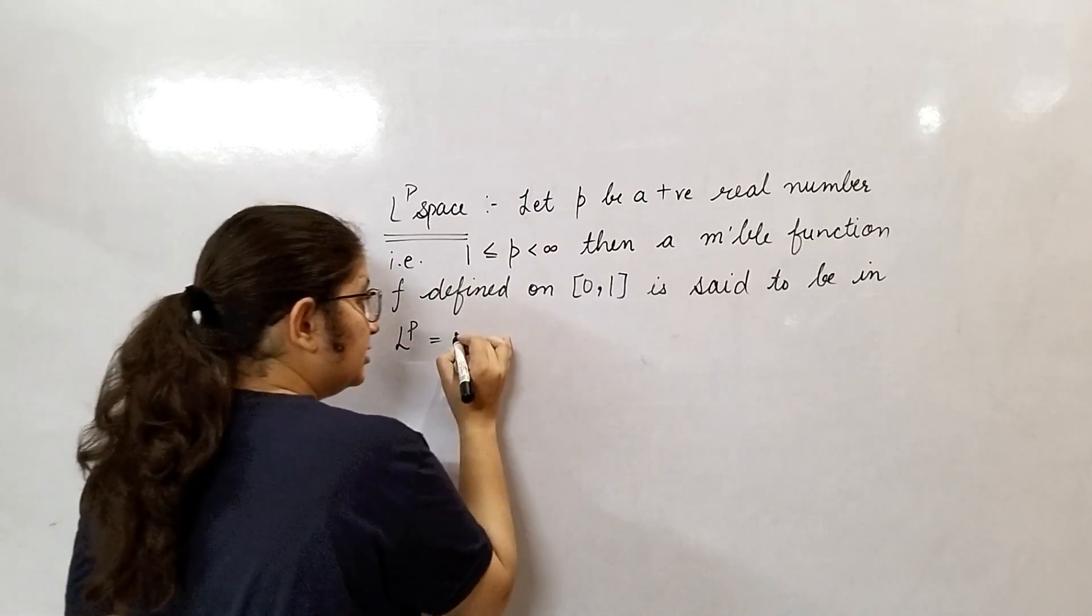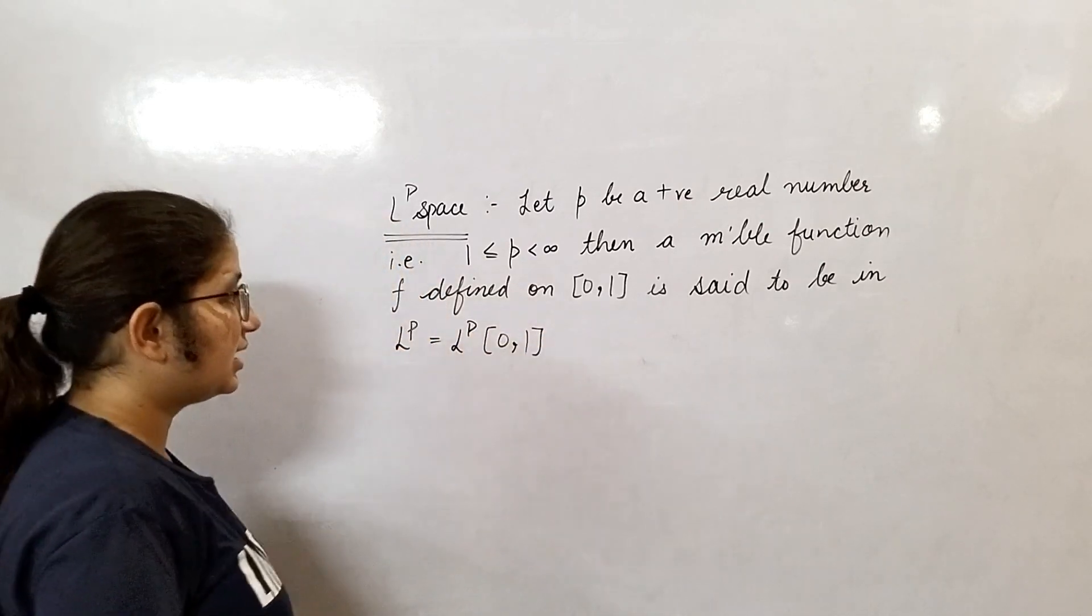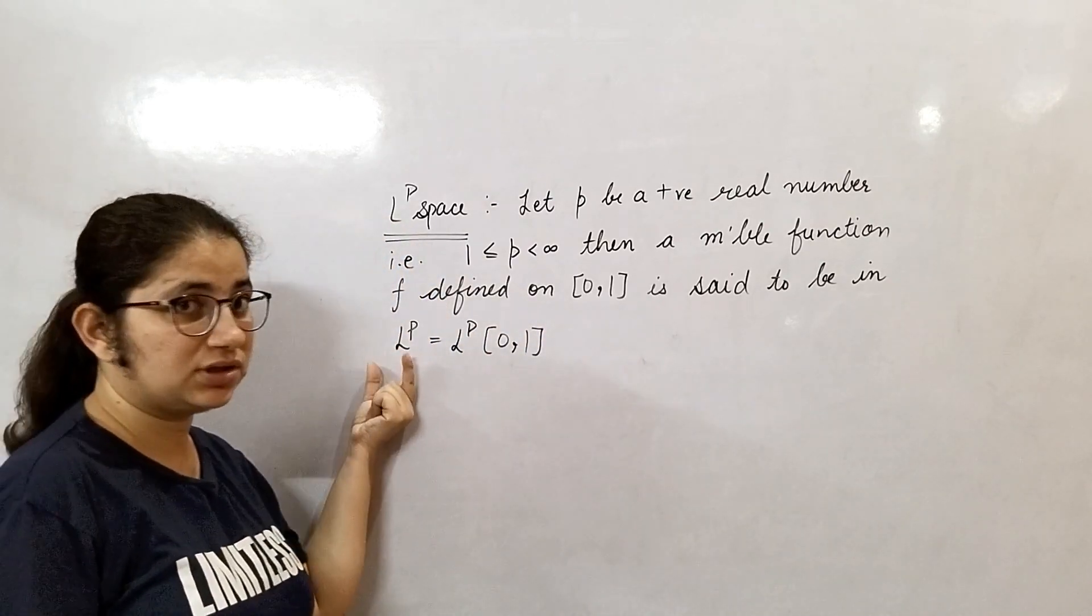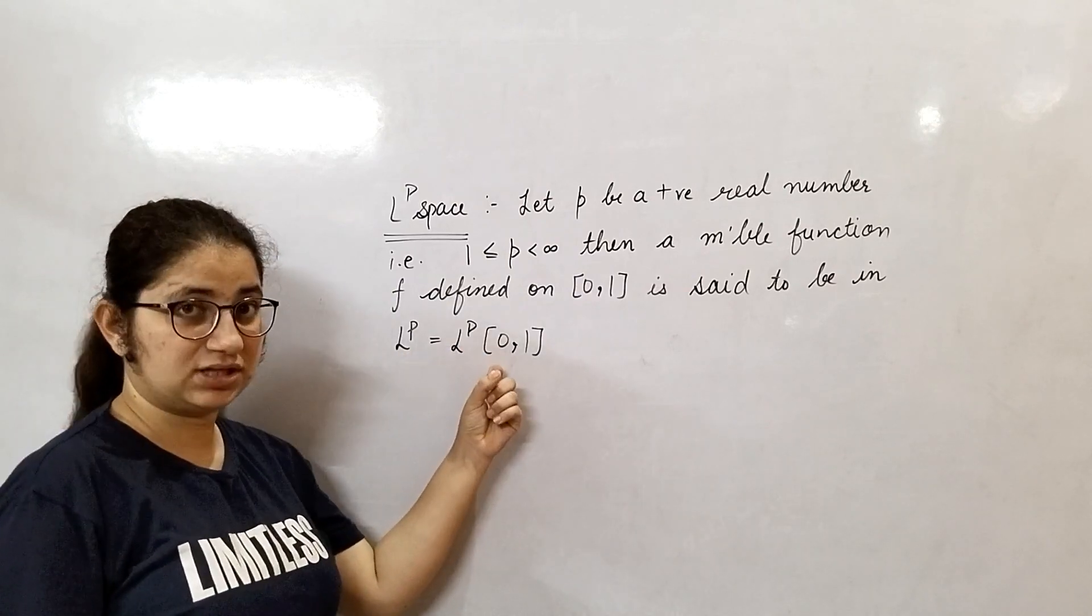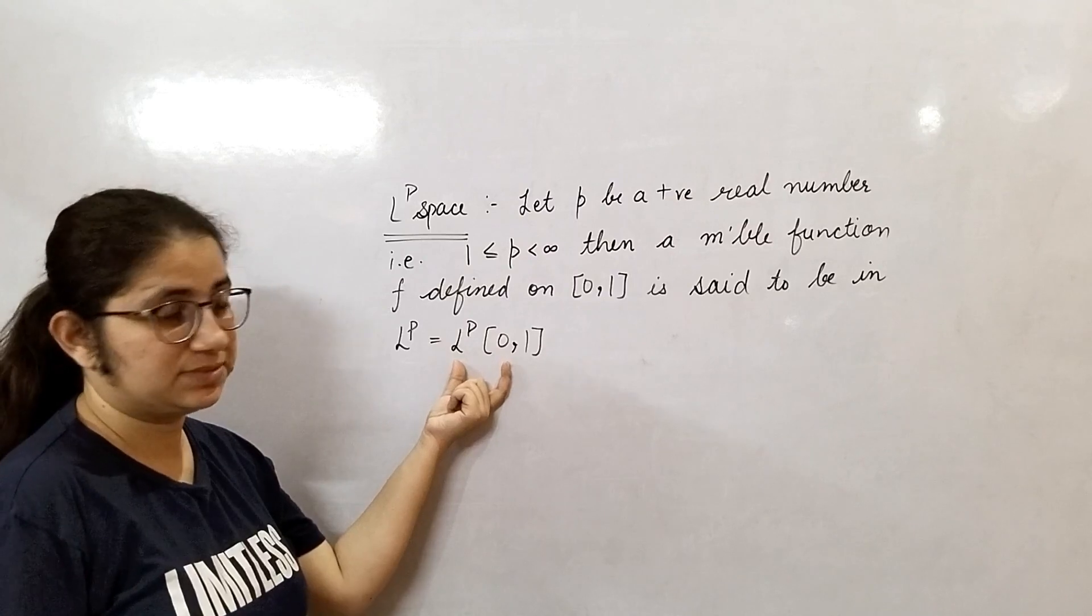LP of 0, 1 means that in LP space the function you considered is defined on 0, 1. This is the notation of LP space.